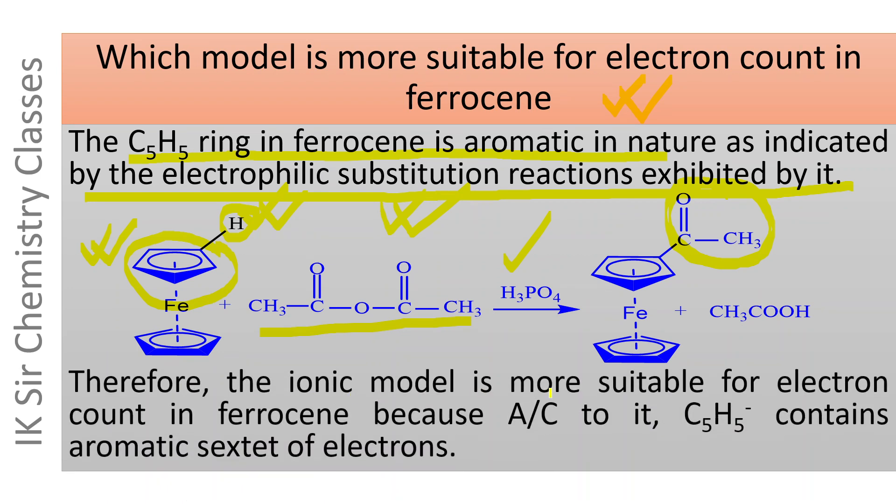Therefore, the ionic model is more suitable for electron count in ferrocene. Because according to ionic model, C5H5 minus ion contains aromatic sextet of electrons. This is why the ionic model for electron count in ferrocene is more appropriate than the covalent model.